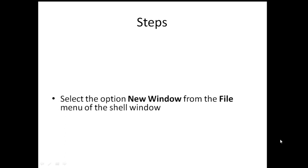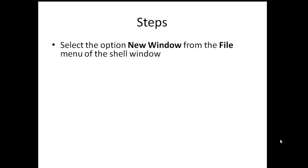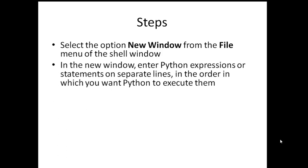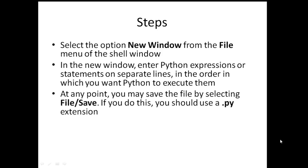The steps to write and run a script are: first, select the option 'New Window' from the file menu of the shell window. In the new window, enter all the Python expressions or statements on separate lines in the order in which you want Python to execute them. At any point you may save the file using the file save option. You have to use the extension .py to save your scripts.